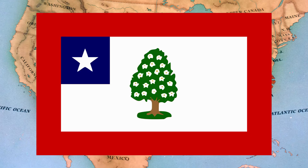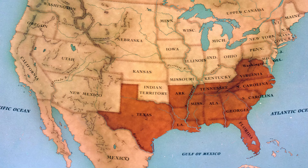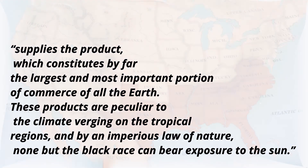The secondary sentence of the Secession Declaration of Mississippi states that 'Opposition is thoroughly identified with the institution of slavery, the greatest material interest of the world.' This document furthers the point when it cements its white supremacist ideology by claiming: 'Supplies the product which constitutes by far the largest and most important portion of commerce of all the earth. These products are peculiar to the climate verging on tropical regions, and by the imperious law of nature, none but the black race can bear exposure to the sun.'